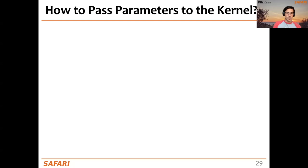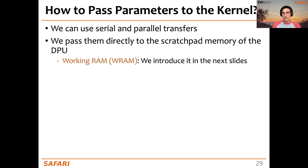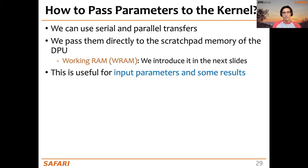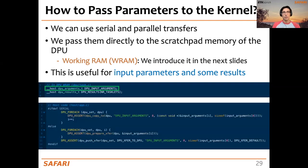To pass parameters to the kernel, we can use serial and parallel transfers, and it's possible to pass input parameters directly to the scratchpad memory of the DPUs, the WRAM. In the DPU code, we declare input arguments and results using the host qualifier to make them accessible by the host. We then use serial or parallel transfers referencing these DPU input argument identifiers declared in the DPU code.